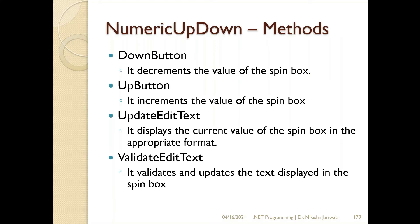The methods of the NumericUpDown control: 'DownButton' — if I want to decrease the value, I call this method and the value decreases. 'UpButton' — calling this increases the value. 'UpdateEditText' — if I want the current value displayed to the right of the spin box to appear in the appropriate format, I call this method. 'ValidateEditText' — this validates whatever value the user has entered in the NumericUpDown control, checking whether it is within the set range.